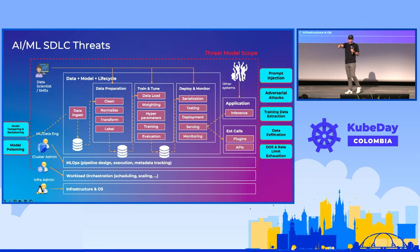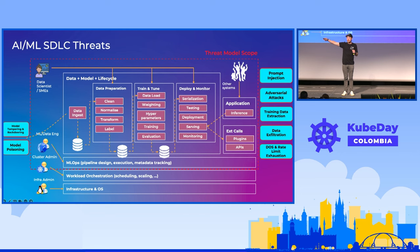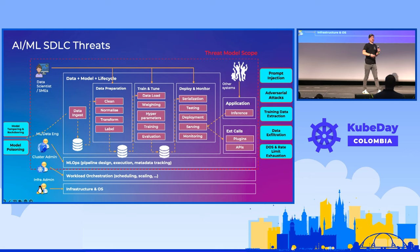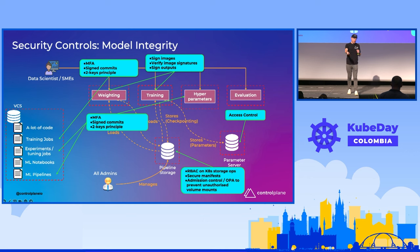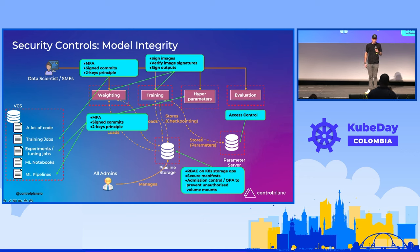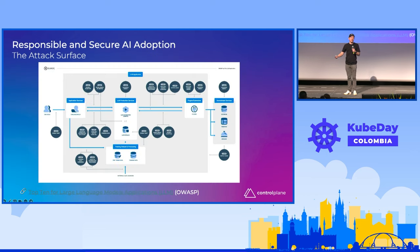Some of the threats — we care about the tampering and poisoning of the model initially. But then at the other side, what about hostile users injecting malicious prompts that might cause the model to reveal its training data? Or it might generate unexpected outputs, because these are non-deterministic systems. The integrity of the model, if we're pulling these models externally and then making our own tunings, the attack surface is huge.